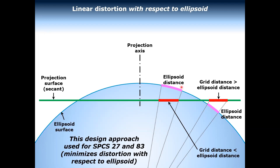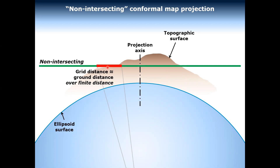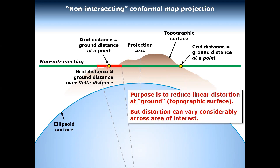The opposite is true on the other side, where the projected distance is shorter than the ellipsoid distance. This is the typical situation — it's how state plane 83, state plane 27, and UTM are designed. Most of the width of your zone has grid distances that are short because the docking surface is below the ellipsoid surface, and they're longer on the outside. But there's a much smaller area on the outside. The problem is people don't map or survey on the ellipsoid — they survey on the ground.